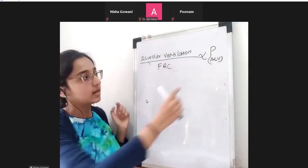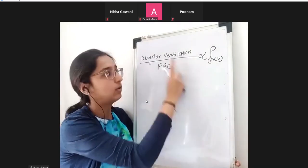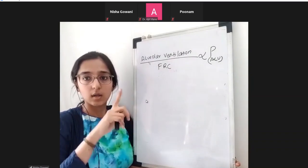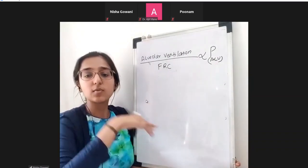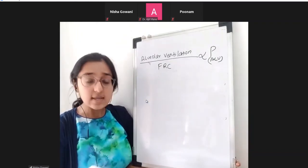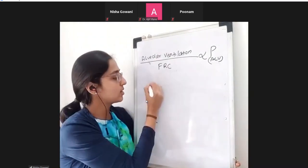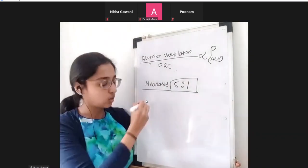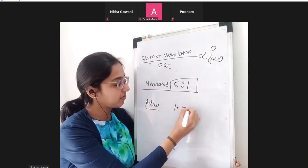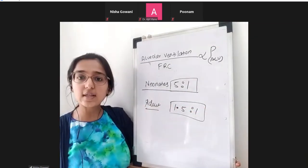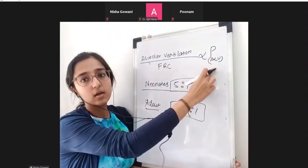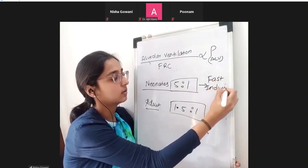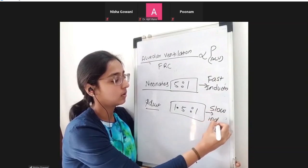The ratio of alveolar ventilation to FRC is directly proportional to the alveolar partial pressure achieved. This ratio is 5:1 in neonates compared to 1.5:1 in adults — meaning neonates achieve alveolar partial pressure faster and therefore have faster induction with inhalation agents.